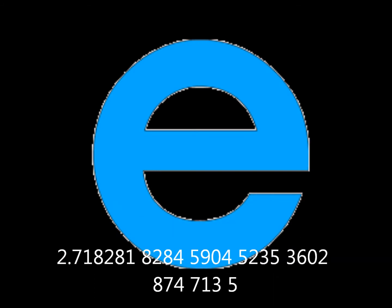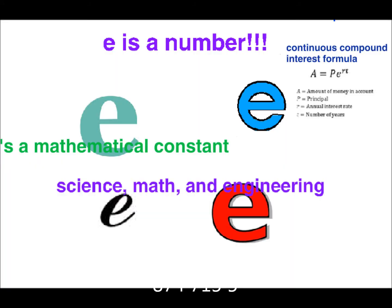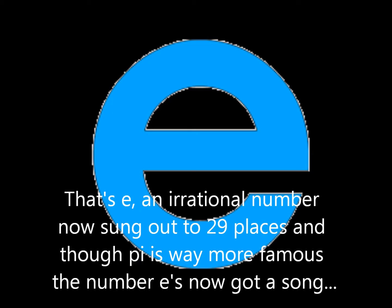2.71828182845904523536028747135 — that's E, an irrational number, now sung out to 29 places. And Pi is way more famous.